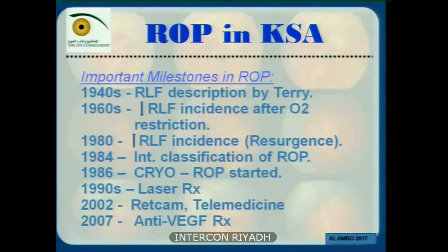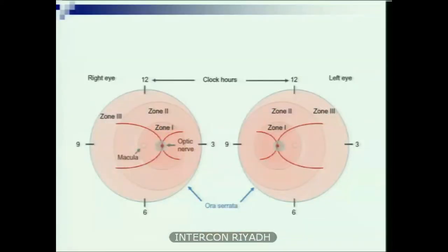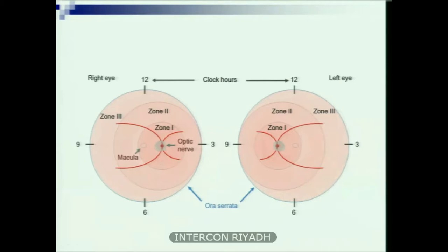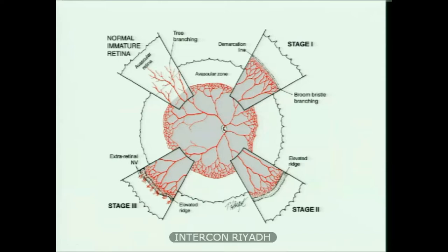When there is more ischemia — the driving factor from avascular retina — new blood vessels grow out of the retina: extra retinal new blood vessels. This is stage three. Stage four is when those blood vessels, accompanied by fibrous glial tissue, contract and pull the retina — traction retinal detachment. Stage four A is when the macula is not involved; stage four B when the macula is involved. Stage five is total retinal detachment, causing total blindness.